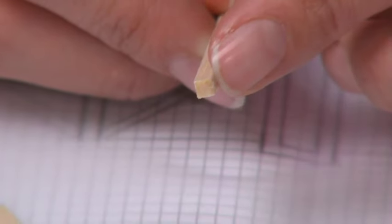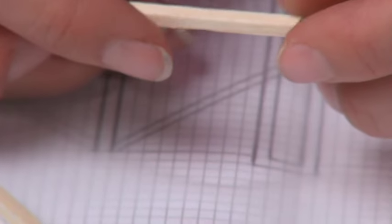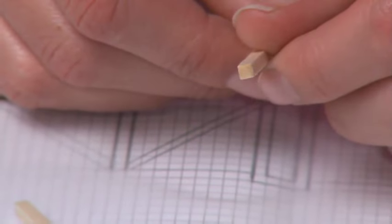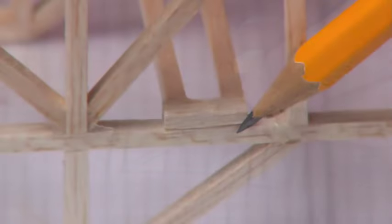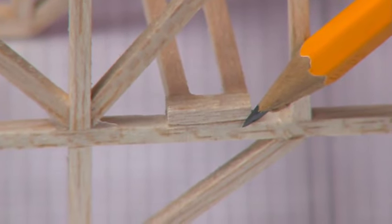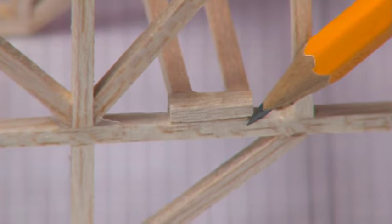When building your bridge, remember that glue does not work well on the end grain of wood. You will construct a stronger bridge if the joints are made with the side grain of the wood.